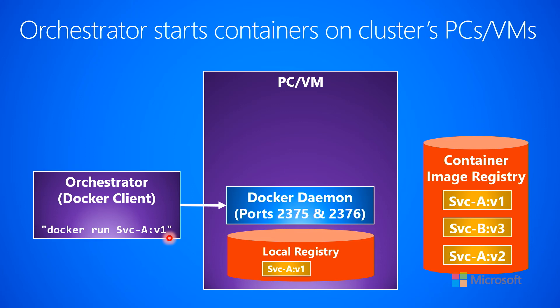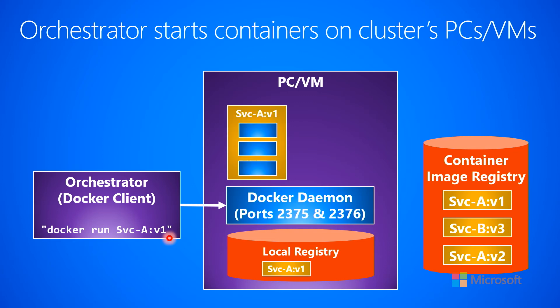The next thing that happens is the Docker daemon goes and creates a new container on the VM and loads that immutable image into the container. These blue boxes represent the executable, the libraries, and the runtimes. Now you have a container on this VM that's running that particular service with all of its dependencies completely self-contained.